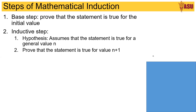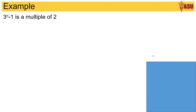So let's take a couple of quick examples. I'm going to do some examples that are not in the book, but they are easy to understand. So '3^n minus 1 is a multiple of 2' is what we are trying to prove. This is a very easy thing to understand just by looking at the problem, but let's go about proving it using mathematical induction. So the first step is the base step.